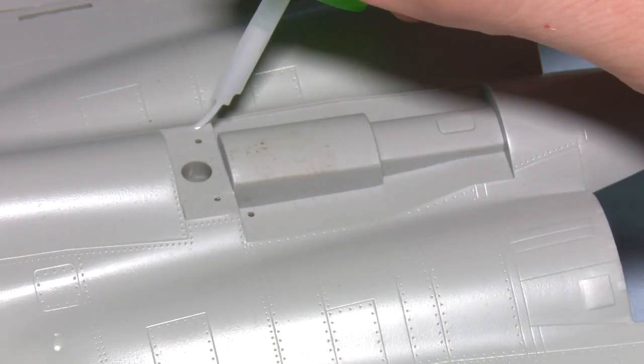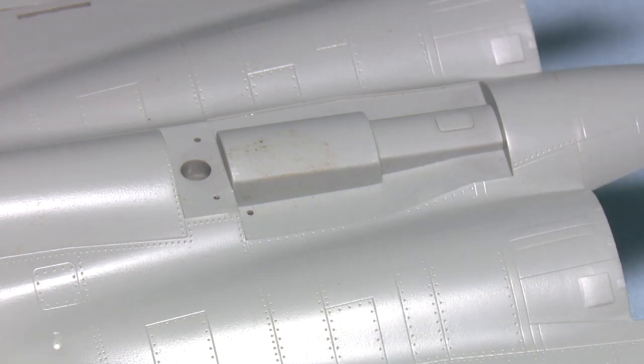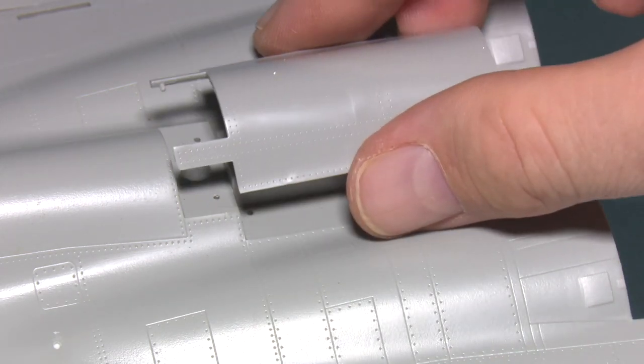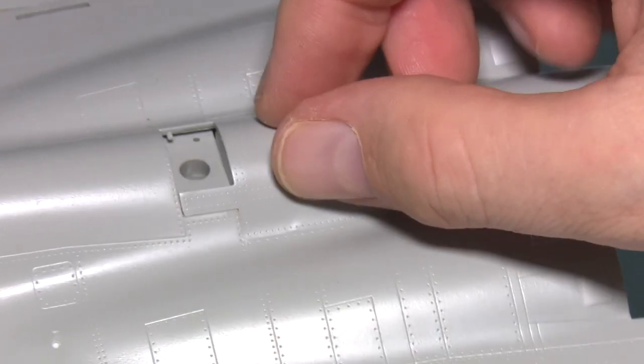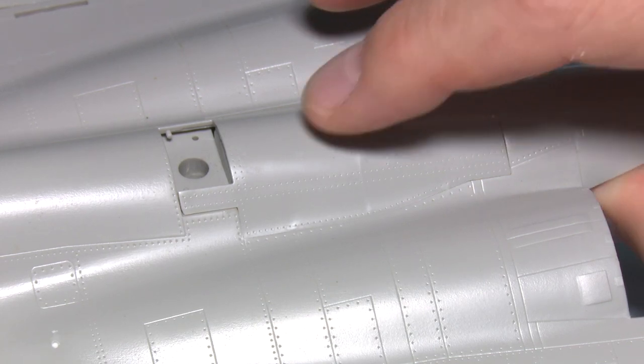Occasionally you will get panels that will just plop onto the fuselage and in this scenario you really only need to apply glue to one surface.